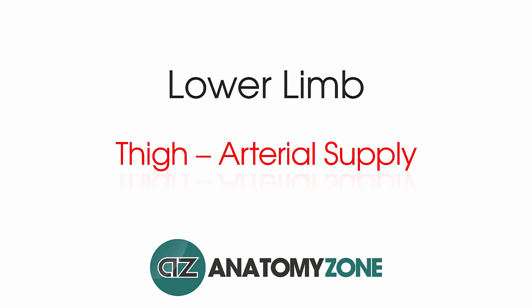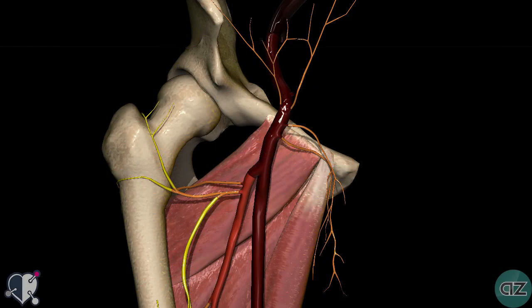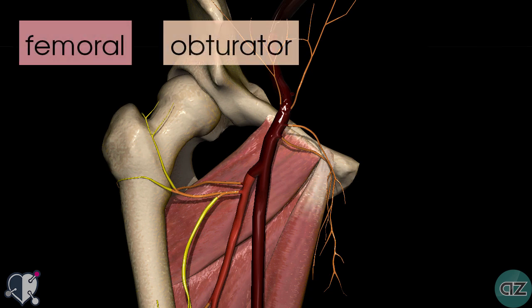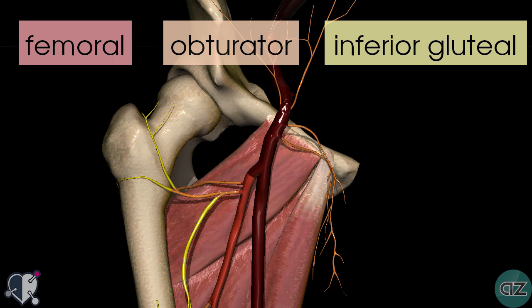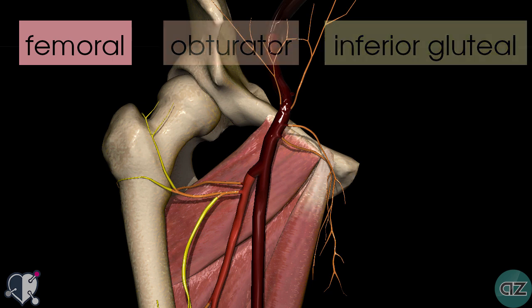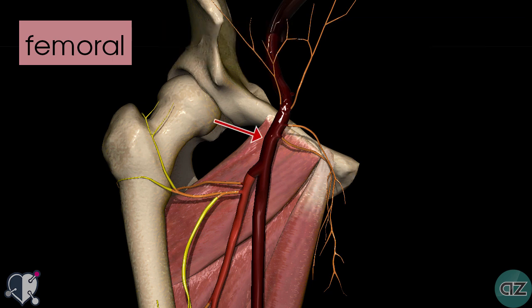Hi, this is Peter from AnatomyZone, and in this tutorial we're going to take a look at the arterial supply to the thigh. There are three arteries which supply the thigh: the femoral artery, the obturator artery, and the inferior gluteal artery. The obturator artery and the inferior gluteal artery are branches of the internal iliac artery, which were covered in the previous tutorial. The femoral artery is the largest branch which enters the thigh and supplies most of the lower limb, so in this tutorial we're going to focus on the various different branches of the femoral artery.